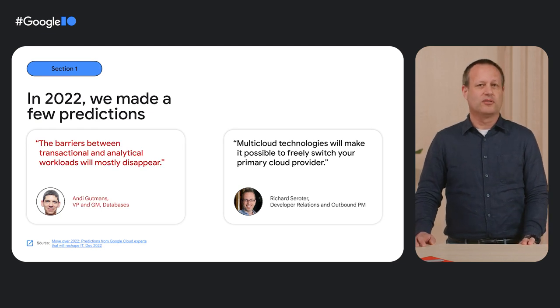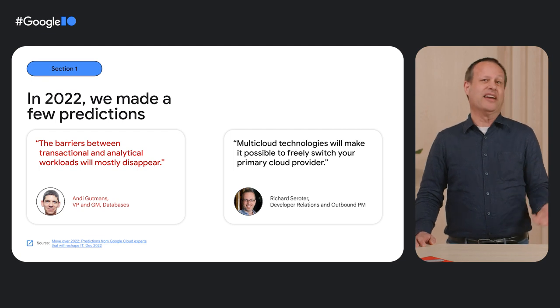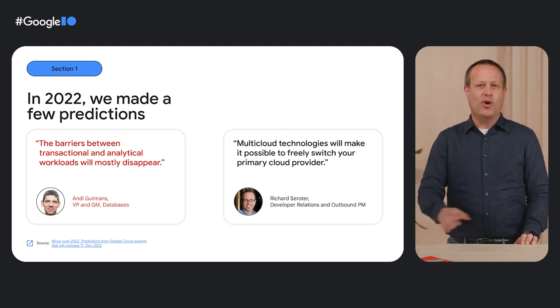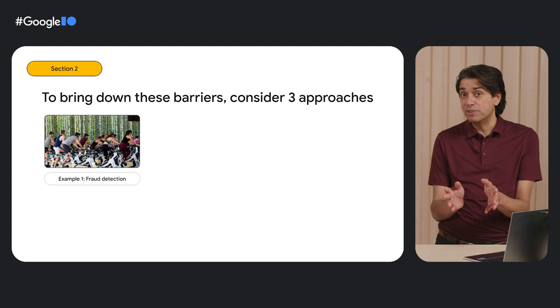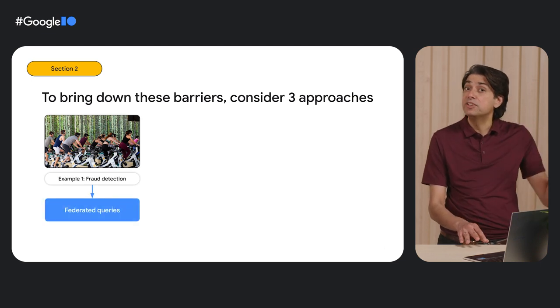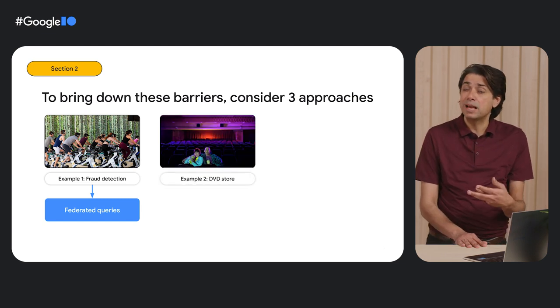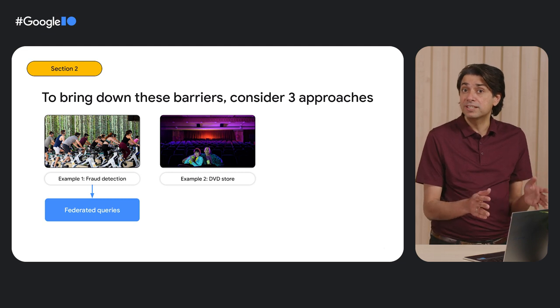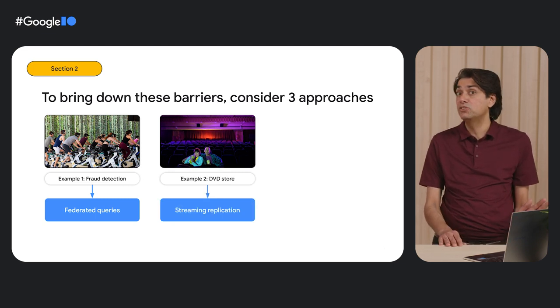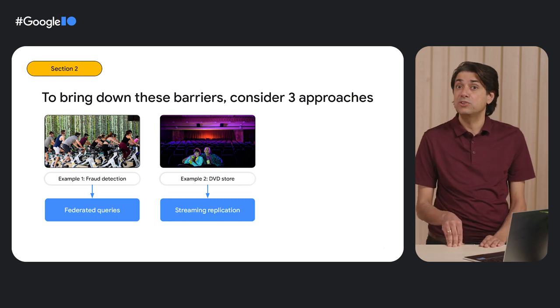So let's start with the first prediction. Let's say that I have a database, probably many databases, and a data warehouse. How do I analyze data that's coming from both sides? The three examples that we started with just happen to match the three best ways to integrate databases and data warehouses. In the first example, where we flag credit card transactions, we will use federated queries — meaning that we will query across database and the data warehouse. In the second example, where we run reports from our DVD sales, we will use streaming replication — meaning that we will stream data from our databases to your data warehouse.